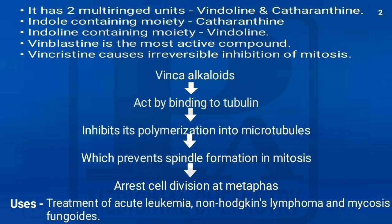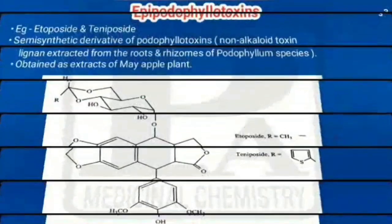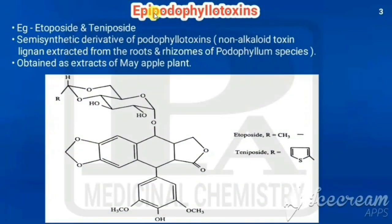That prevents spindle formation in mitosis and arrests cell division in the metaphase. Vinca alkaloids are used in the treatment of acute leukemia, non-Hodgkin's lymphoma, and mycosis fungoides.